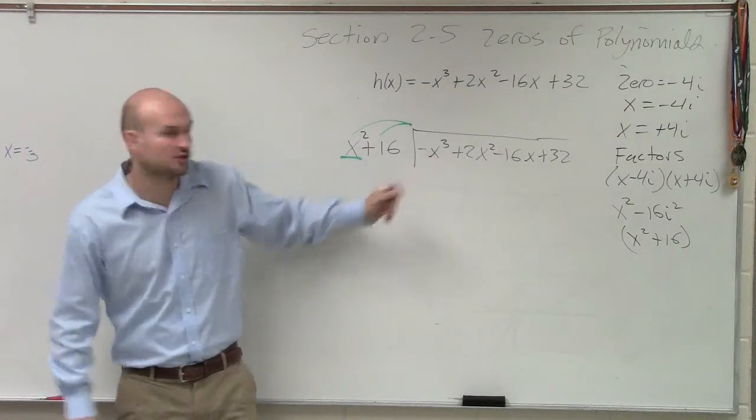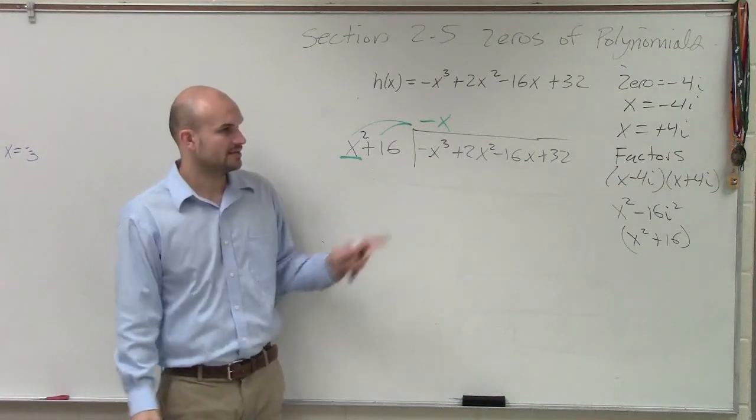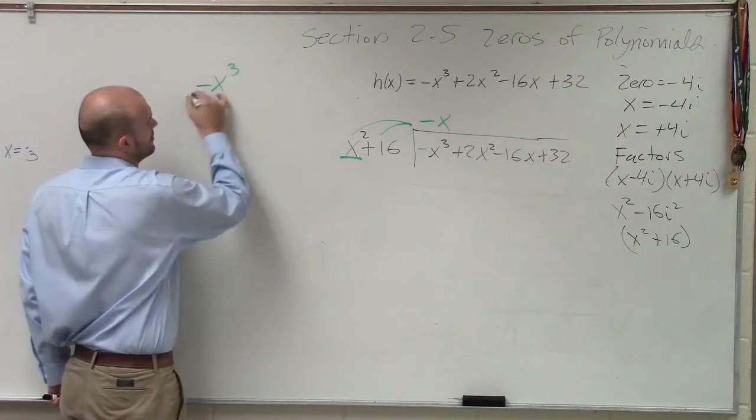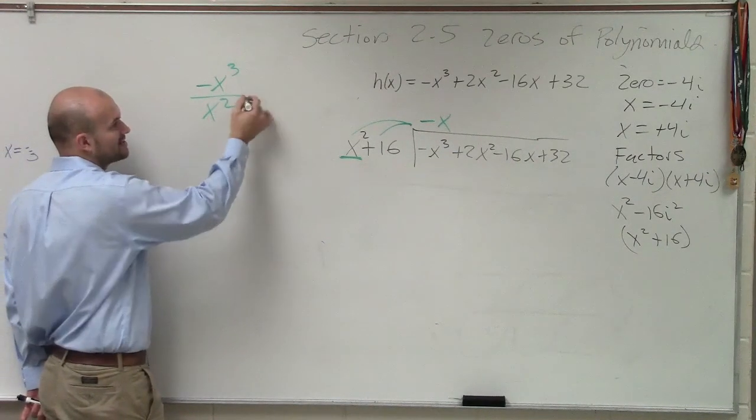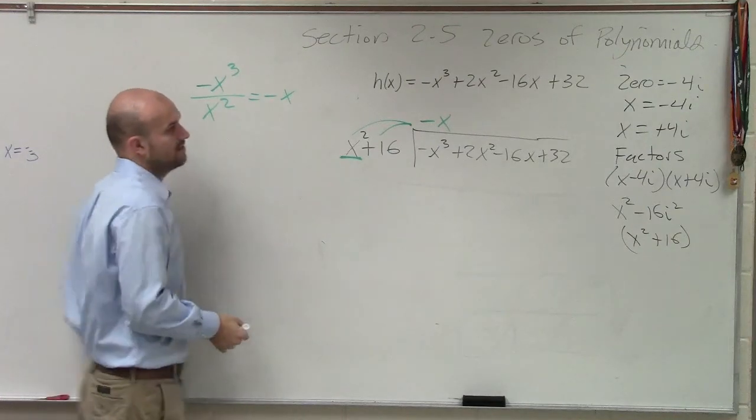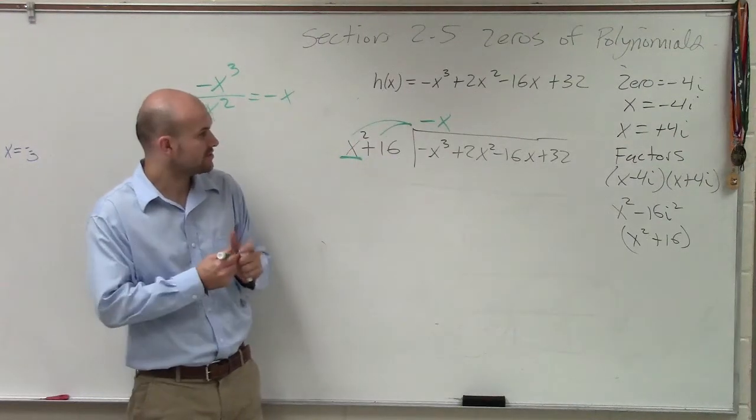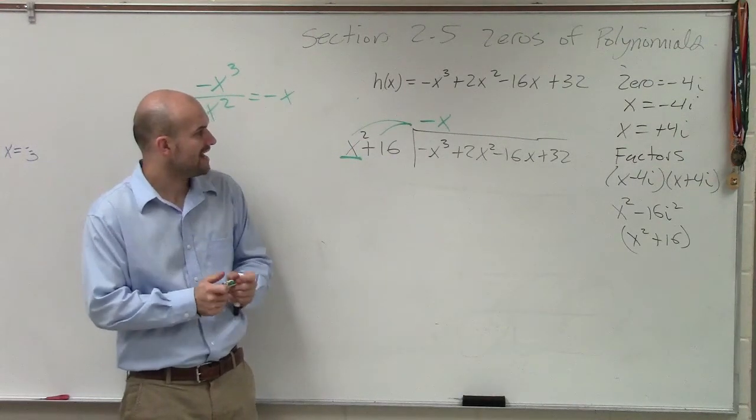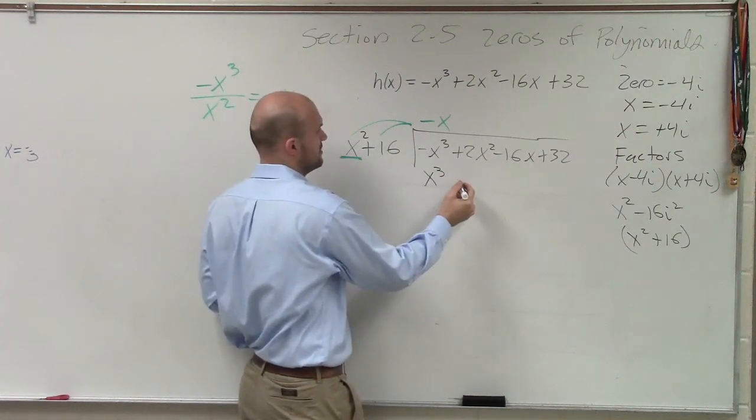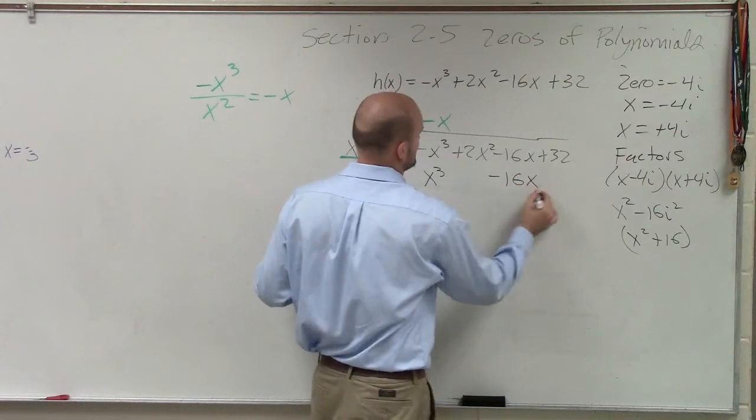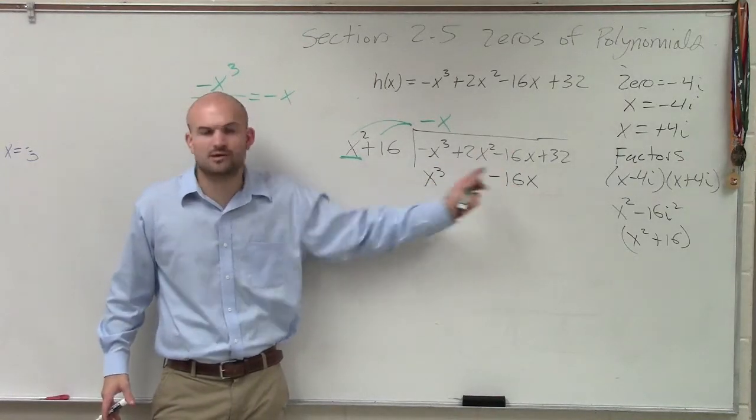x² divides into -x³, negative x times. That's pretty much what I'm asking: -x³ divided by x² equals -x. Then you take that quotient and you multiply it by both terms. So therefore, -x times x² is -x³. Negative x times 16 is -16x. I'm just going to put it under that one because I don't want to put it under the x².